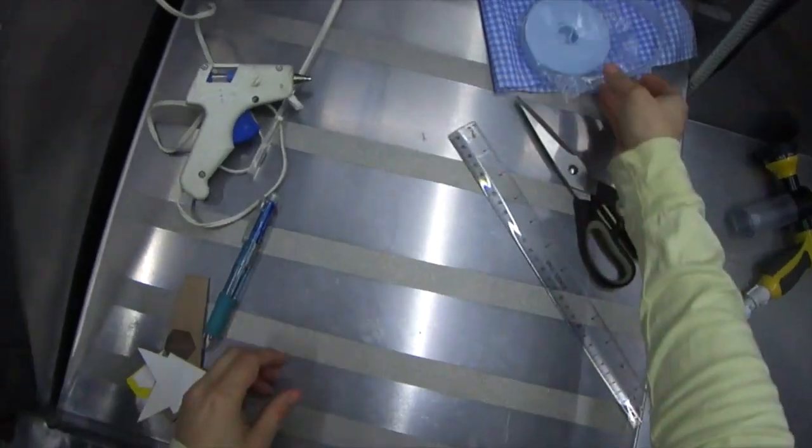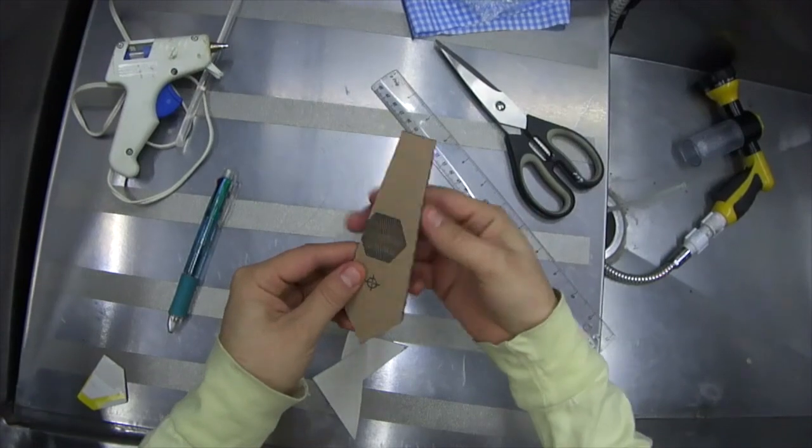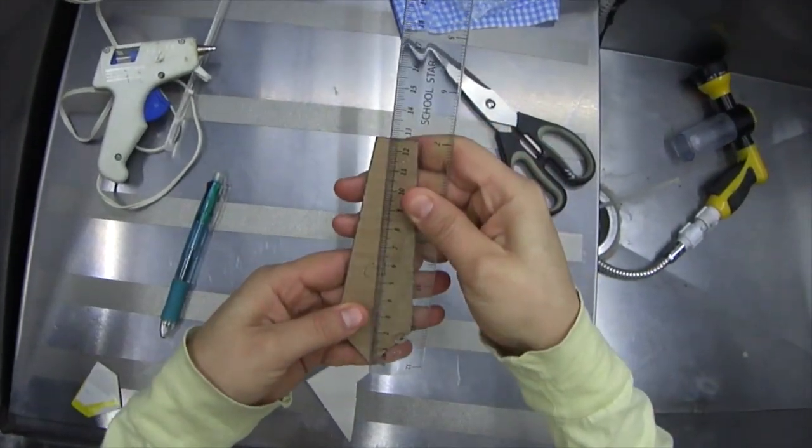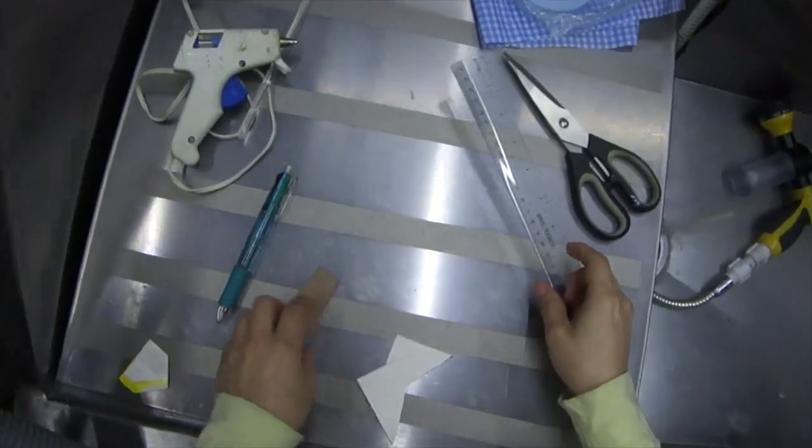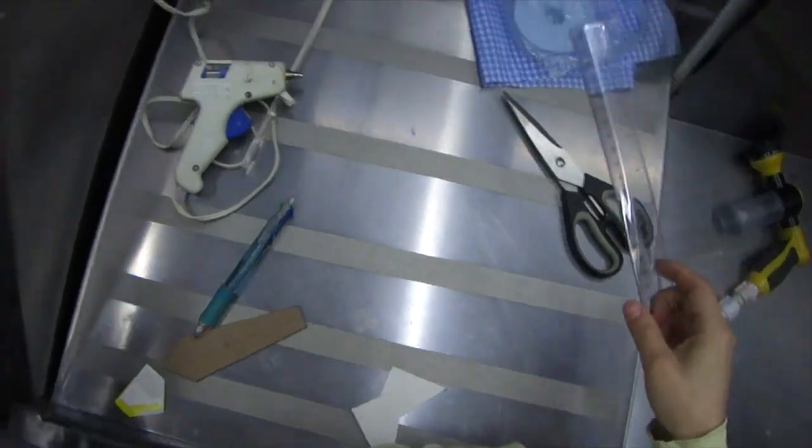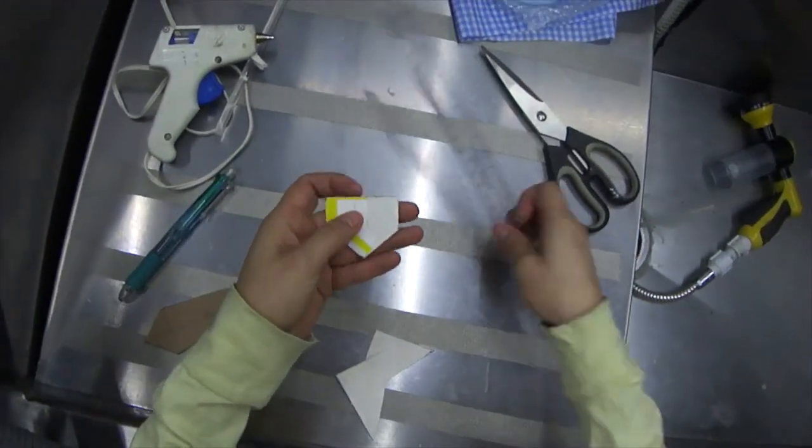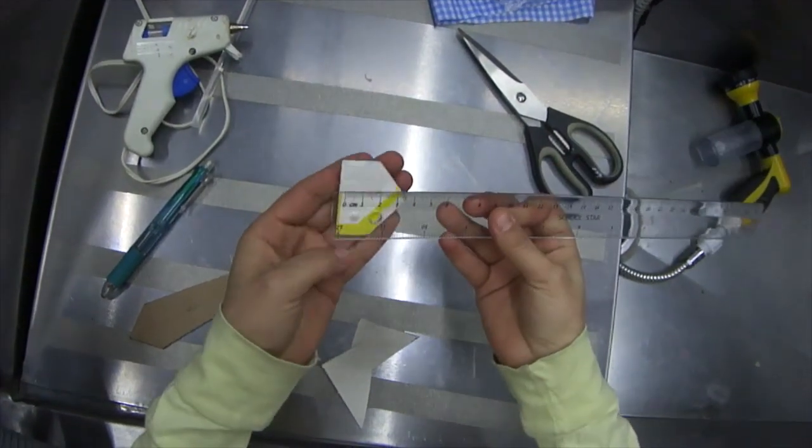We're also going to use this tie pattern. Mine measures twelve and a half centimeters long and four centimeters wide. I've cut this out of a sturdier box so we can use it to trace on our milk carton.